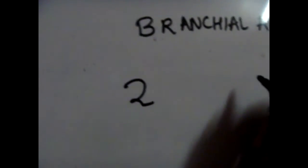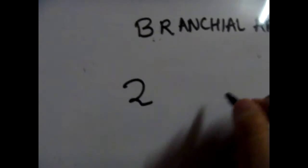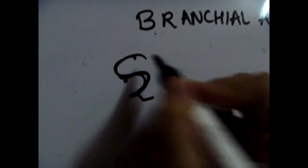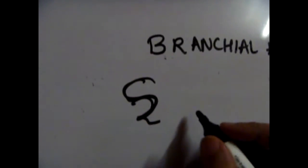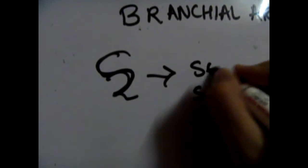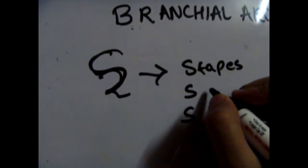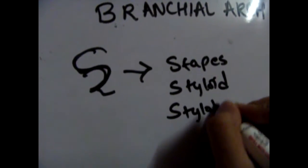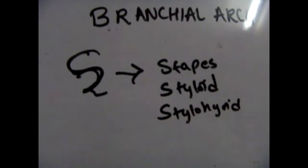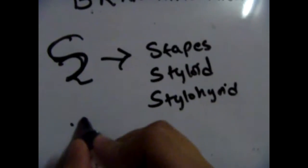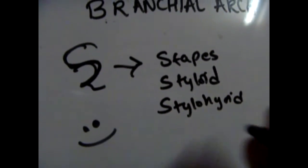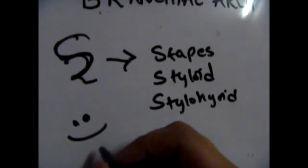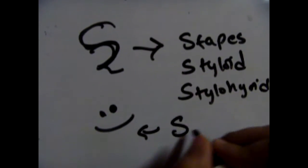Next we're going to learn about the second branchial arch. If you look at two very closely, it does look like a twisted S. So the second branchial arch gives rise to stuff with S, like stapes or the styloid process or the styloid muscle, or anything with S. You smile with an S.